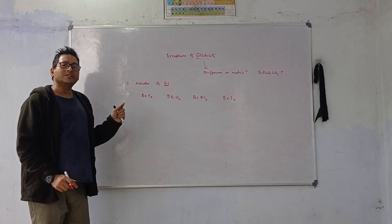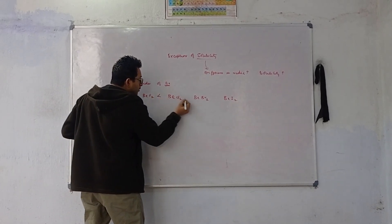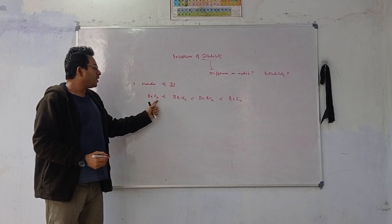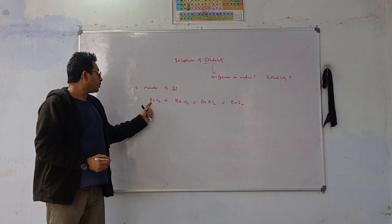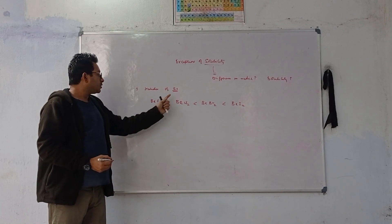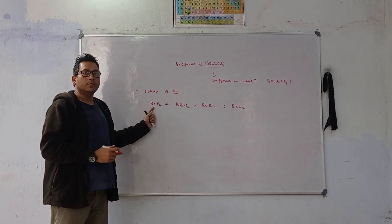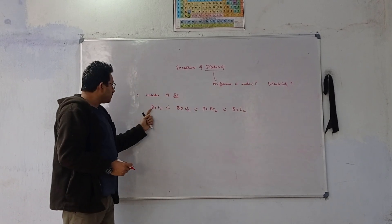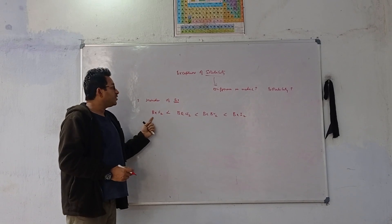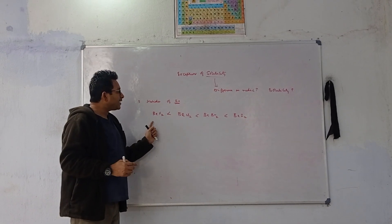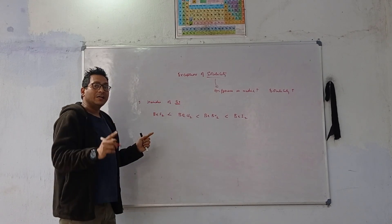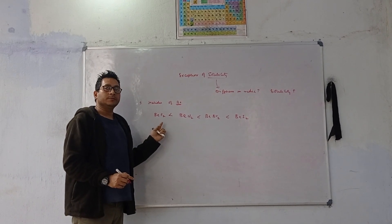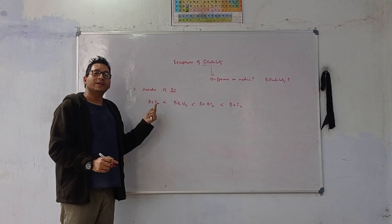In the normal trend, from the earlier classes we learned that the order should follow the radii difference rule — there is good overlapping between beryllium and fluorine, and the compound is less soluble. When the difference in radii is high, the solubility is high. But beryllium and fluorine both belong to the second period, so the difference in radii is less and it is less soluble. However, it was found experimentally that the hydration energy of beryllium fluoride is greater than the lattice energy.